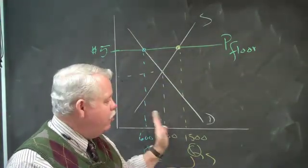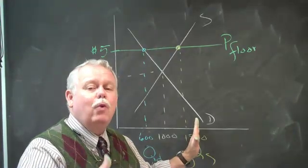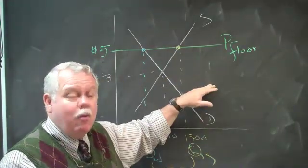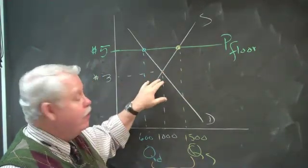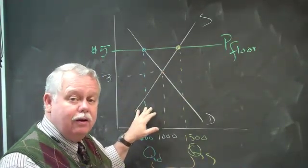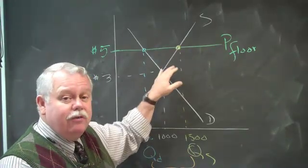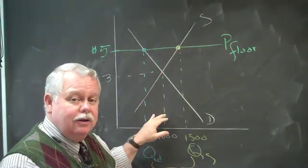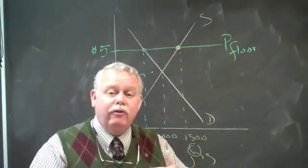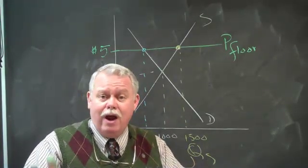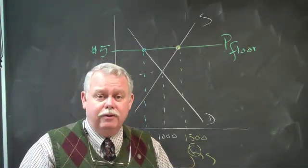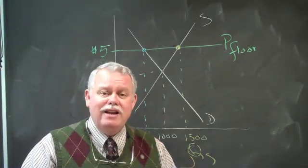The surplus means we produce a lot of product that's wasted, that there's no market for it. Or we create a black market and we sell it on the side for, I don't know, $4, $3, $2 a gallon. But that's not very efficient either. So bottom line is price floors and price ceilings intended to help sellers or buyers typically do more harm than good. Probably not a good idea.